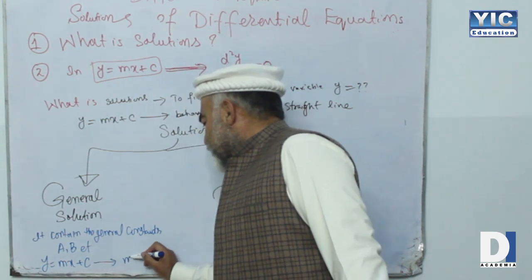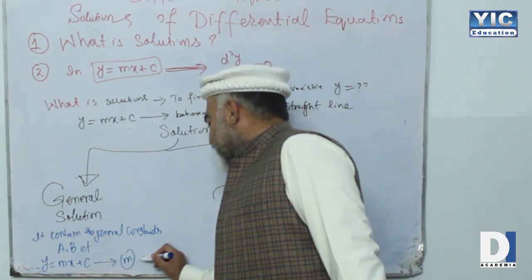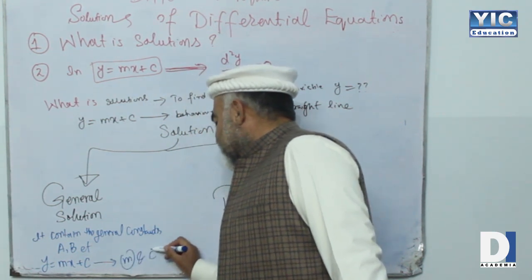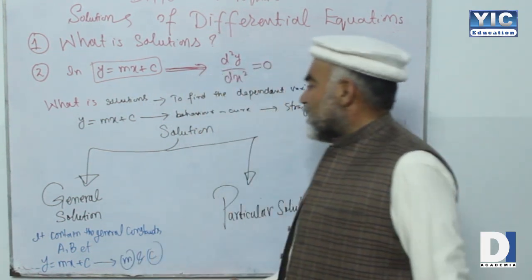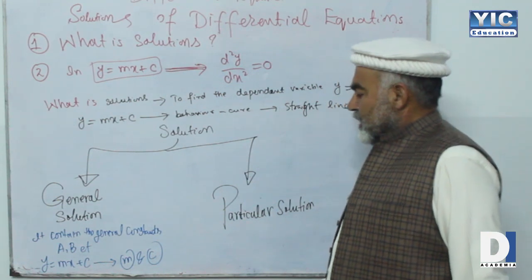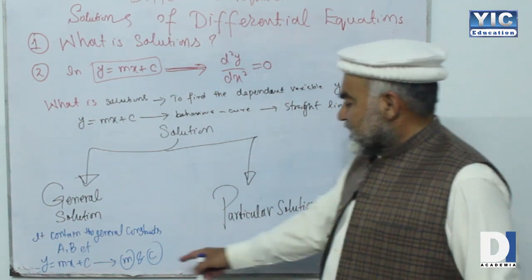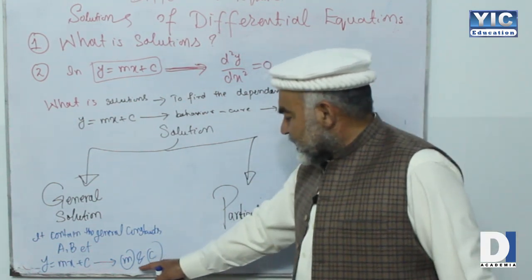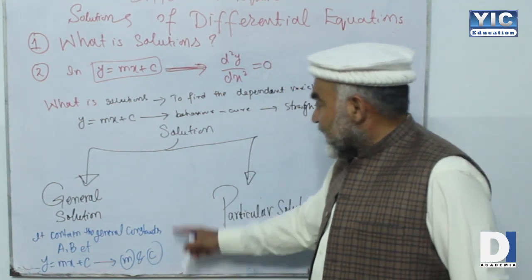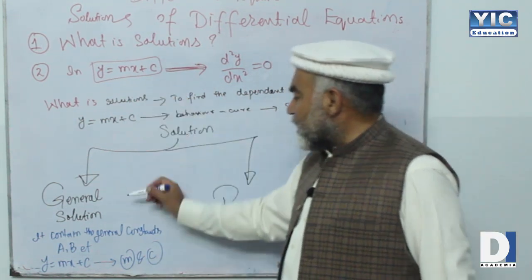Just like y = mx + c, here the general constants are m and c. So the general solution contains the general constants m and c. If you draw the graph of this, you get a family of curves.